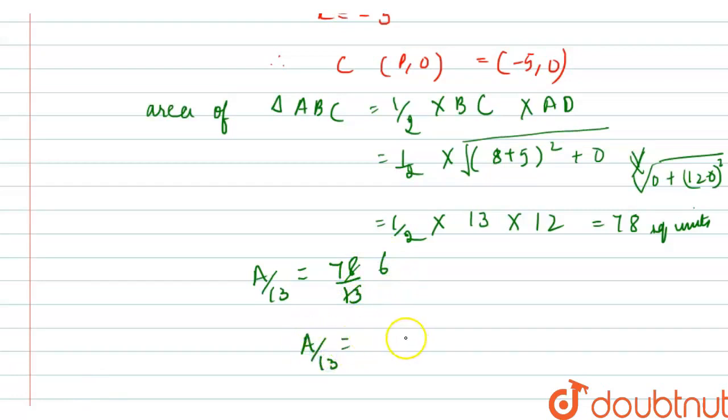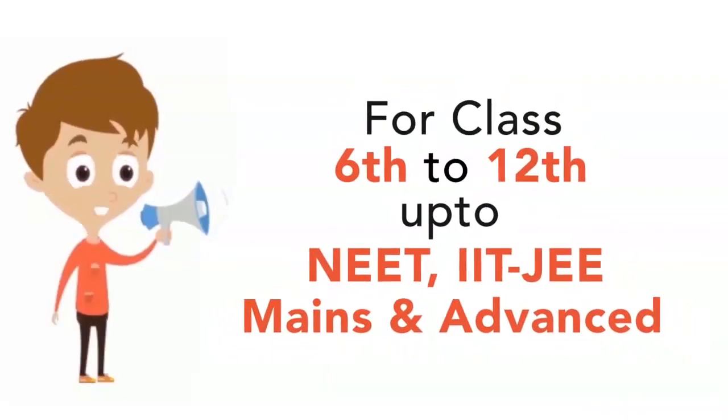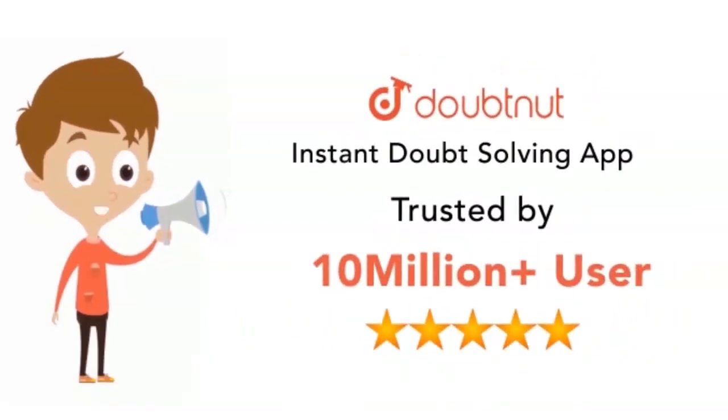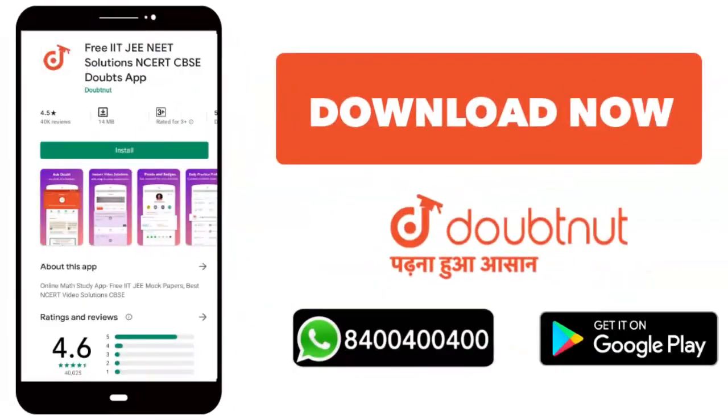Therefore, A upon 13 is 6 square units. I hope this is clear. Thank you. For classes 6 to 12, more than 10 million students use Doubtnut. Today, download the Doubtnut app or WhatsApp your doubts at 8444-444.